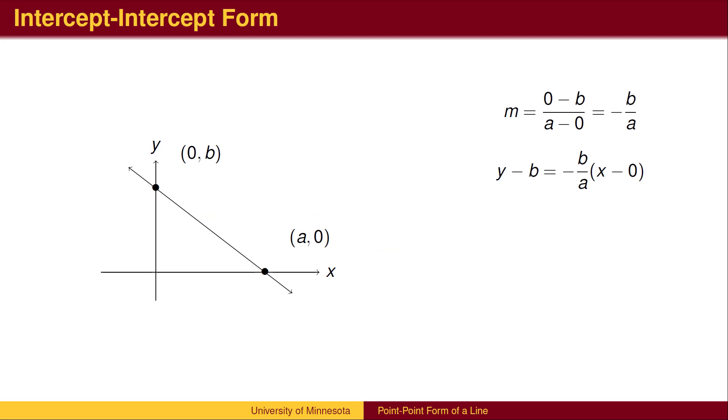A special case is when the two points are the x and y-intercepts. In this case, the slope is negative b over a. Using the y-intercept, the point-slope equation of the line is y minus b equals negative b over a times x.